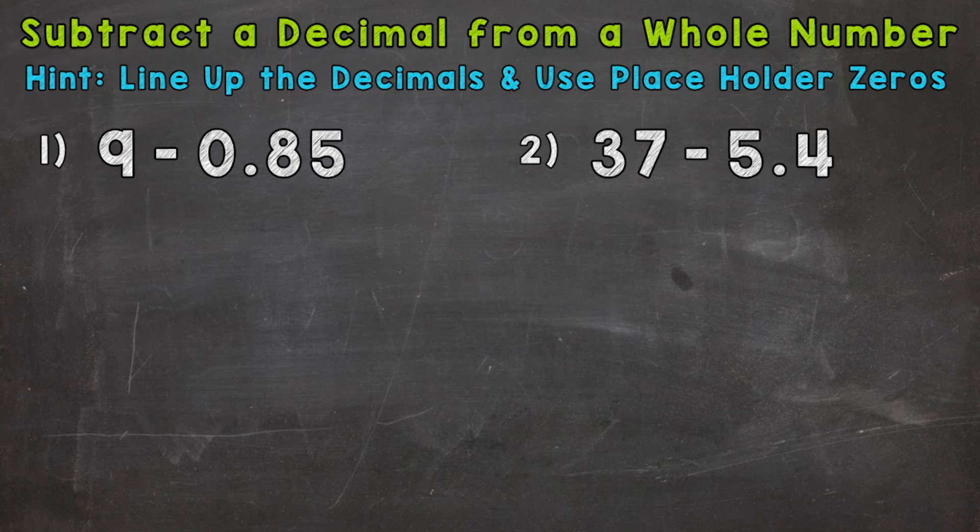So for number one, we start with nine. And you may be asking yourself, how are we supposed to line up the decimals if nine doesn't have a decimal? Well, the decimal isn't shown in the original problem, but every number has a decimal, even whole numbers. We can put the decimal right after any whole number.